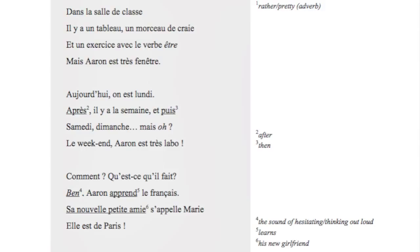'Comment, qu'est-ce qu'il fait? Ben, Aaron apprend le français. Sa nouvelle petite amie s'appelle Marie. Elle est de Paris.' — What does he do? Well, he's learning French. His new girlfriend's name is Marie. She's from Paris. Getting them to play with that basic vocabulary they're learning, extending meaning, putting it into a different context, a different mental landscape — an introduction to semiosis.